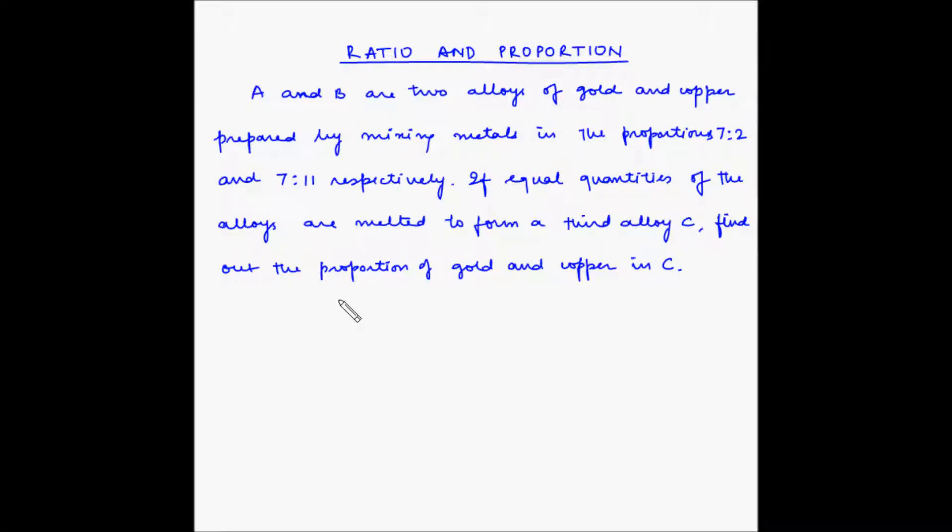A and B are two alloys of gold and copper prepared by mixing metals in the proportions 7 is to 2 and 7 is to 11 respectively. If equal quantities of the alloys are melted to form a third alloy C, find out the proportion of gold and copper in C.